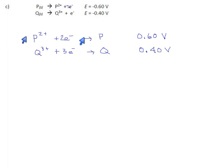So if you got a reaction out of this, the P2+ would be your strongest oxidizer, and reading up the other side, Q metal would be your strongest reducer, and those are the two things that would react.